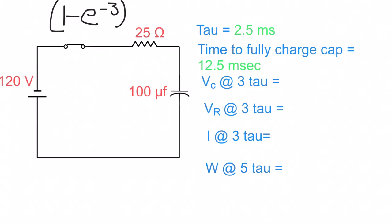And we're going to multiply that by the source, which is 120 volts. We do that, and we get our voltage at the capacitor at the third tau. That works out to be 114 volts.